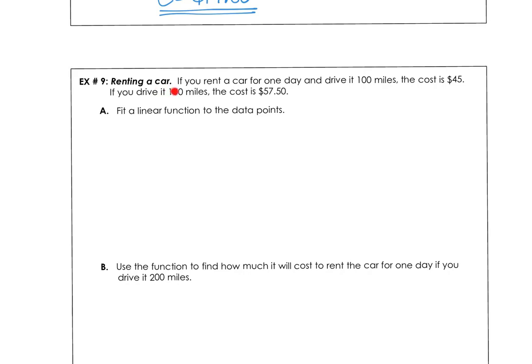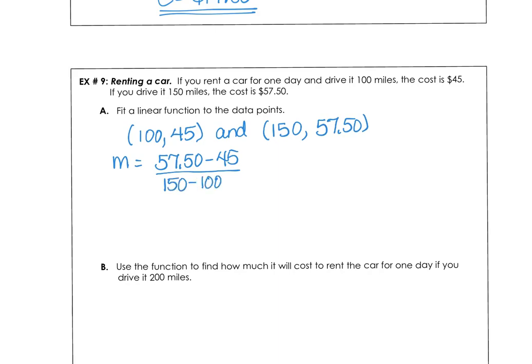Finally, in our last example, we're going to rent a car. And if you rent a car for one day driving at 100 miles, the cost is $45. If you drive at 150 miles, the cost is $57.50. And we want to fit a linear function to the data points. So let's think about that. We know that 100 miles would give us $45, and we also know that if we drive 150 miles, that's going to be $57.50. So we could calculate the slope, the change in the y values divided by the change in the x values, and that's going to give us a quarter.